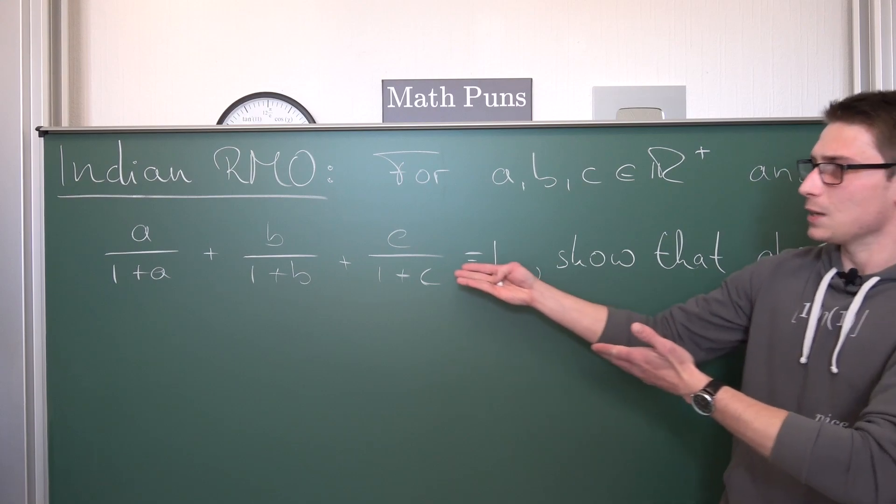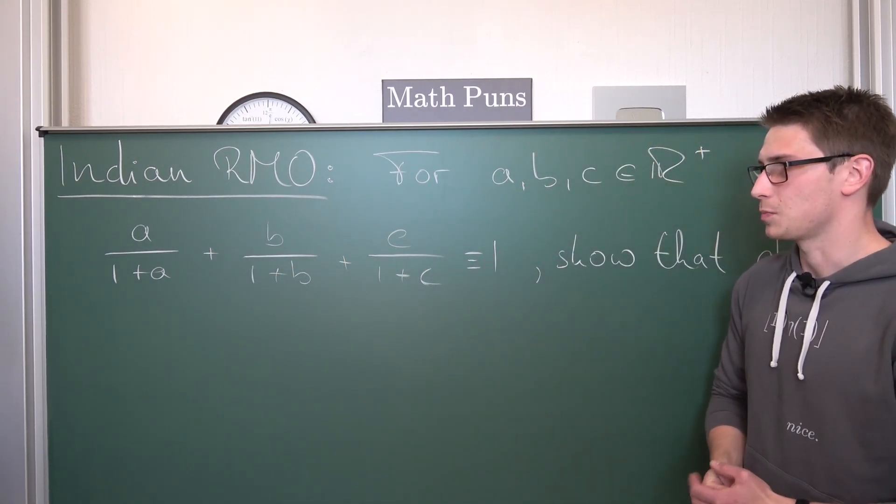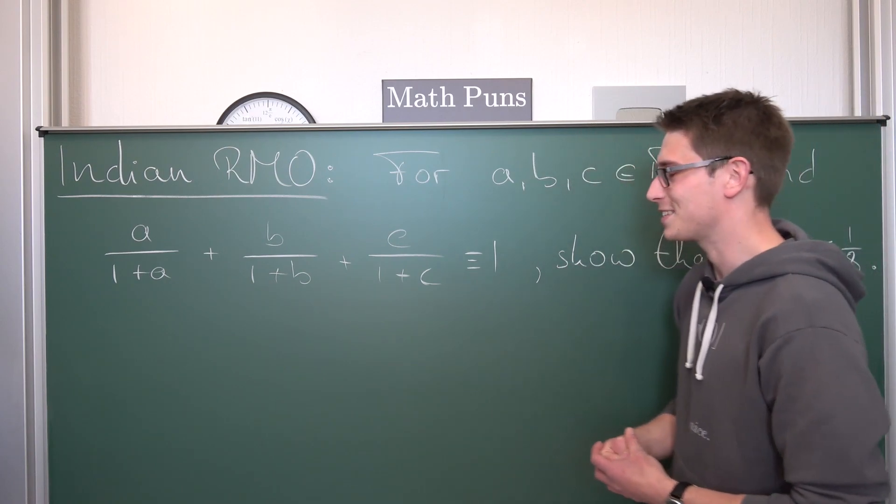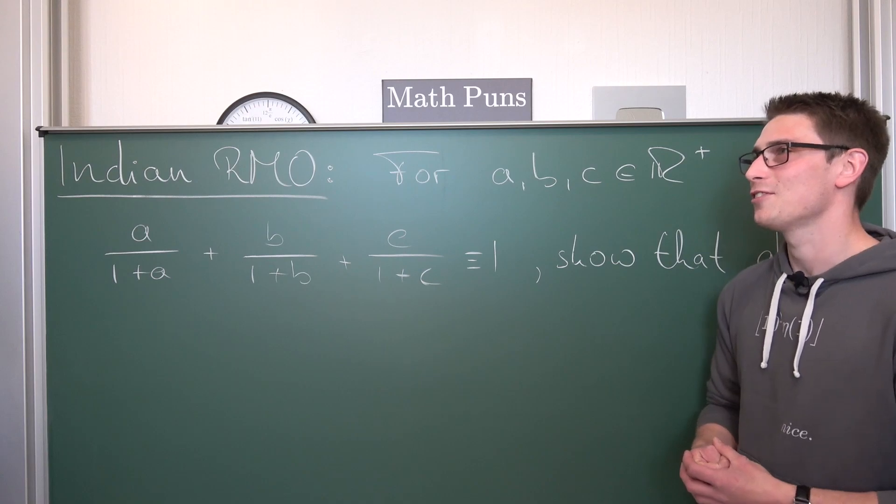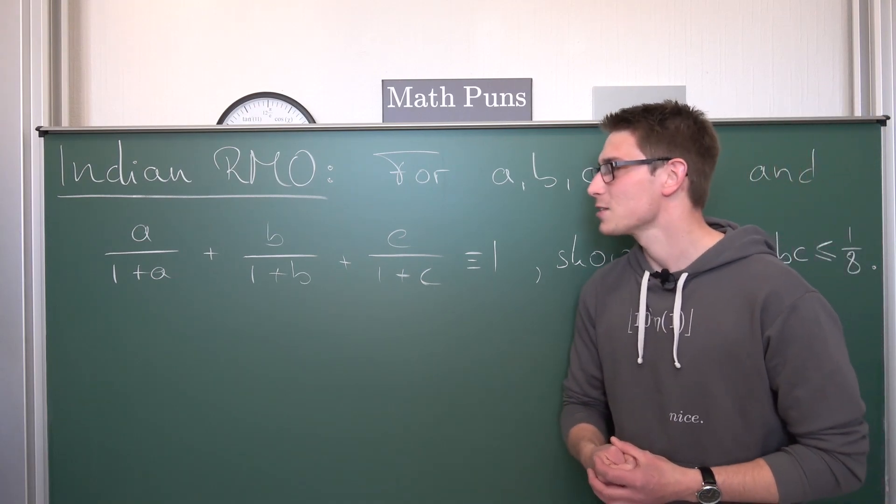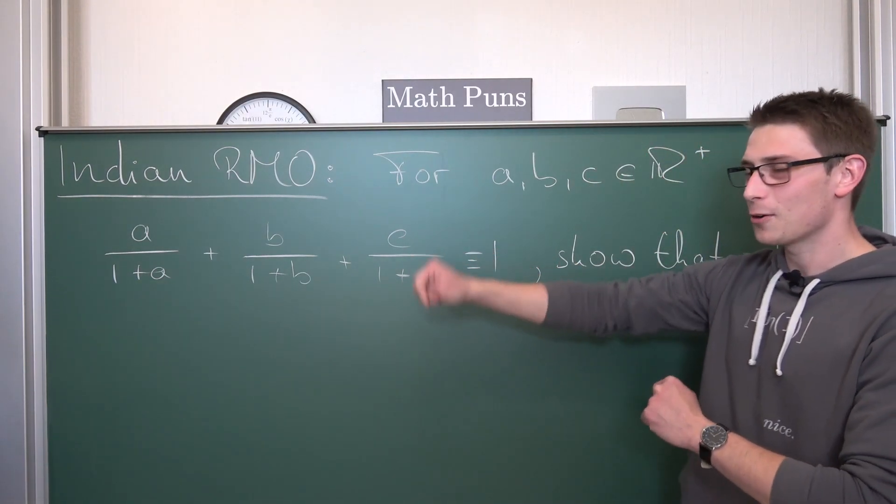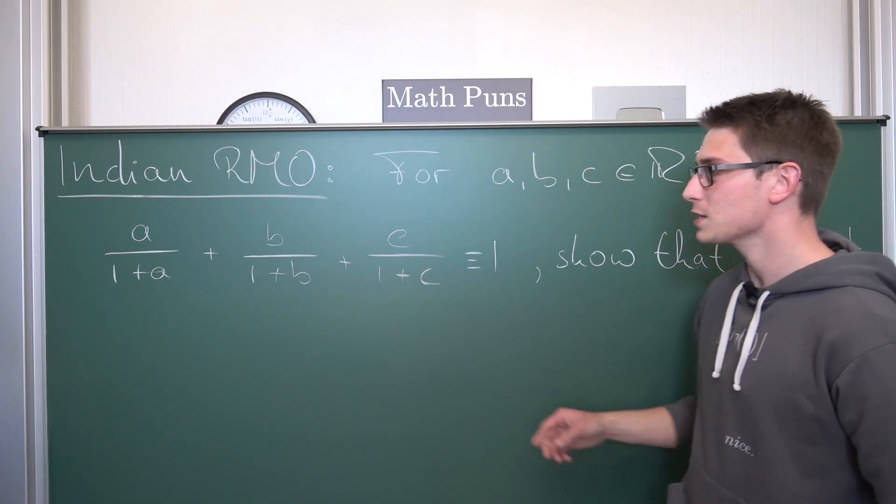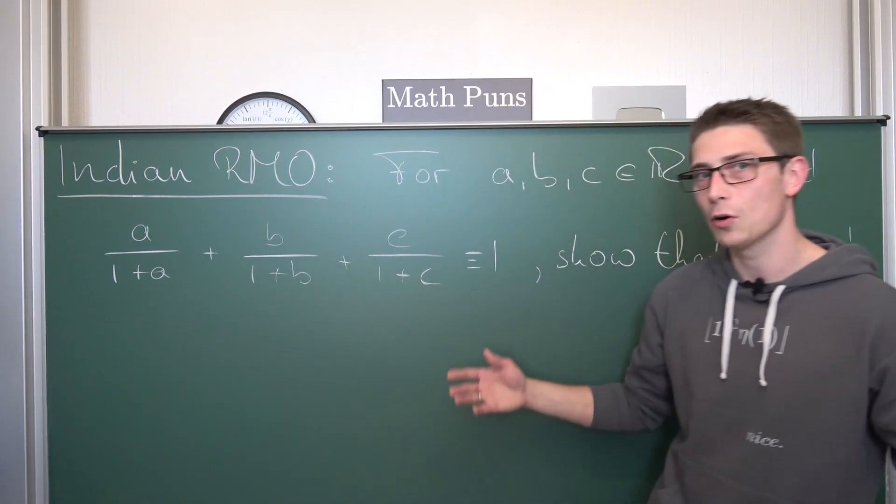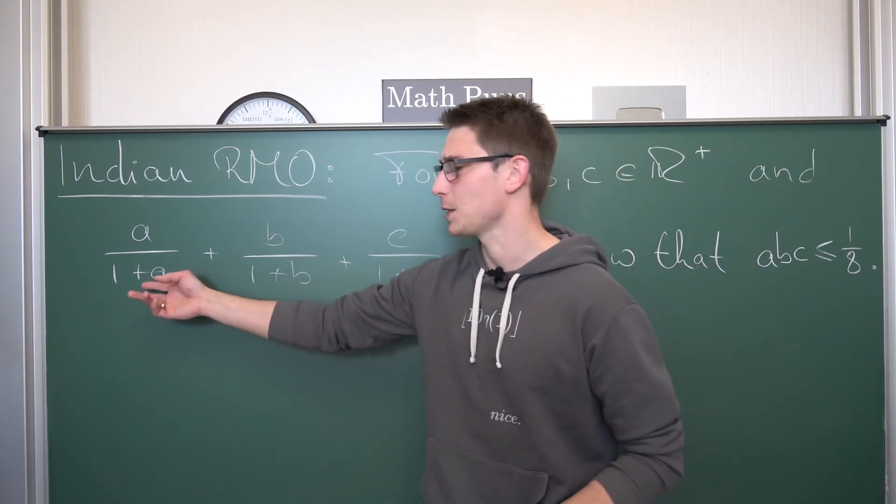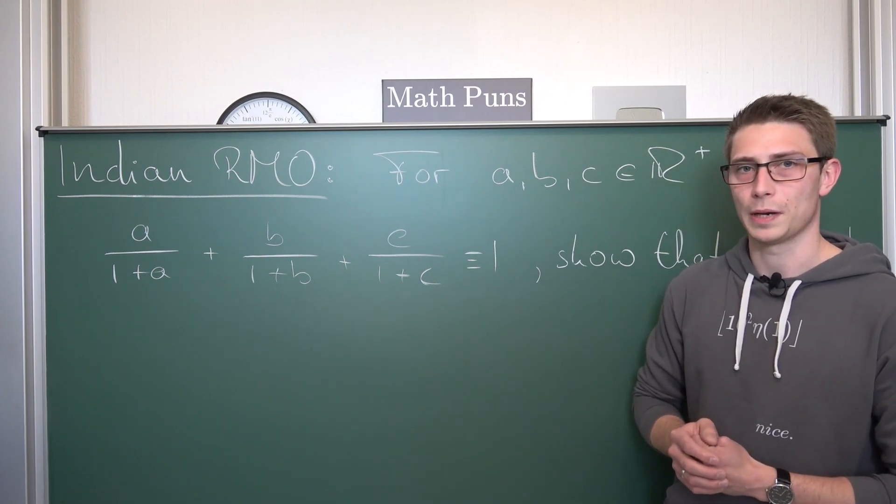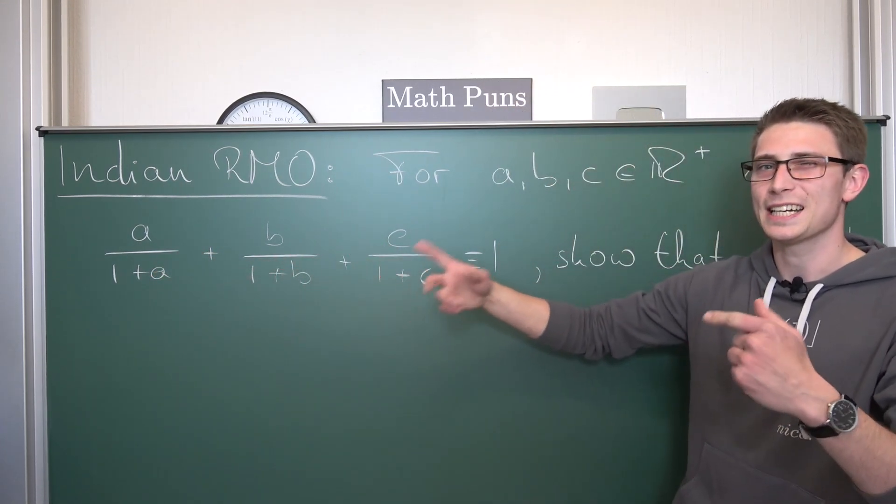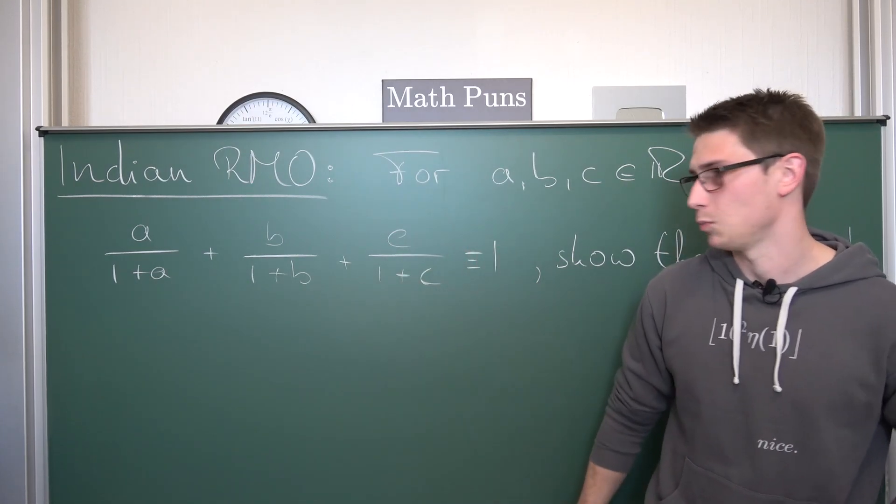Thing is, dealing with fractions sucks. No one likes fractions. So we are going to get rid of the denominators. And that's pretty easy because a, b, and c are all out of the positive reals. None of the denominators are ever going to be equal to zero. Meaning we can safely multiply by the product of all of those denominators. We are going to multiply both sides by (1+a) times (1+b) times (1+c), getting rid of the denominators in the process.